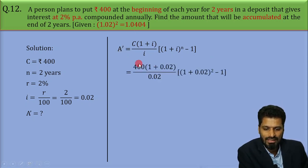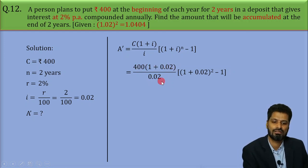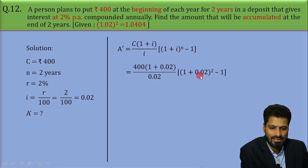So, next step we substitute we get 400 into 1 plus 0.02 divided by 0.02 into 1 plus 0.02 the whole square minus 1. Now, next step 1 plus 0.02 here and here are 1.02, correct?